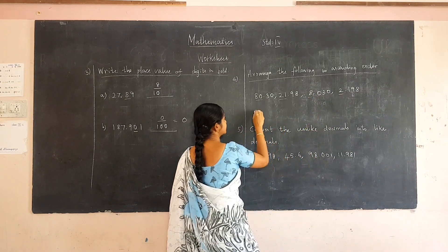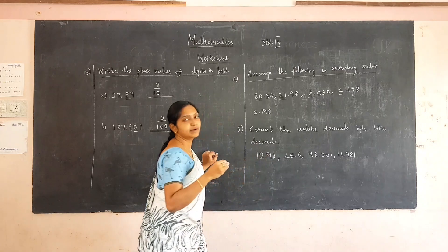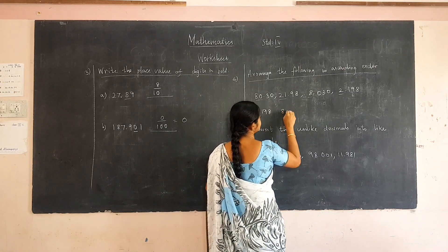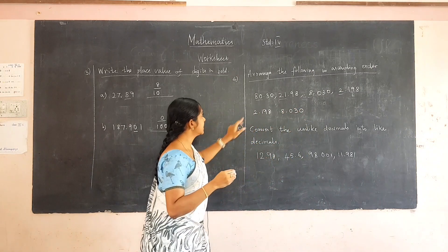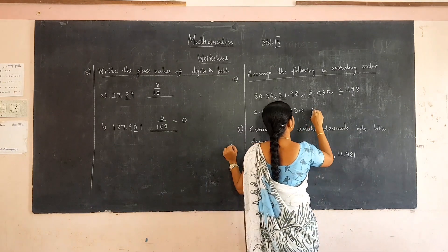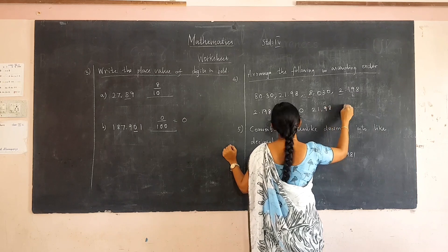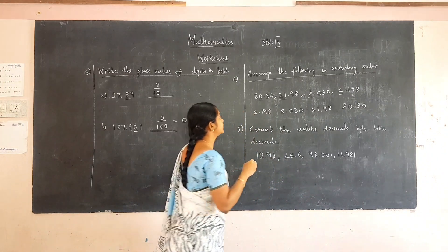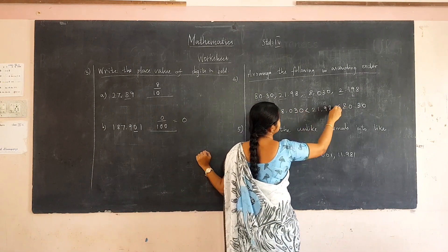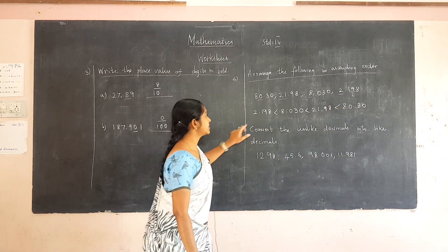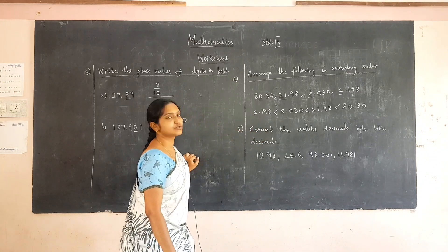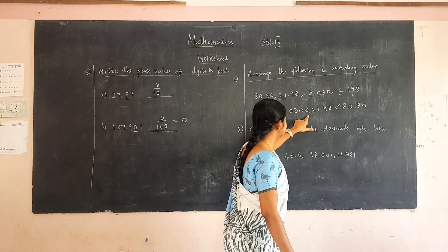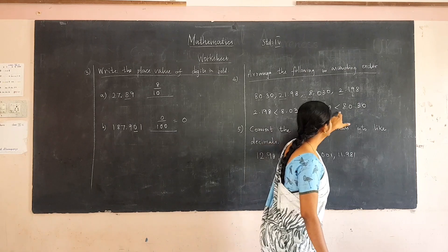Two is the smallest whole number part, so two point one nine eight is the smallest decimal number. Next come the twenty-ones, then twenty-one point nine eight, and then eighty point three zero. We have arranged the decimals in ascending order using the less-than sign. For ascending order we must use the less-than sign; for descending order we must use the greater-than sign. So: 2.198 < 8.030 < 21.98 < 80.30.